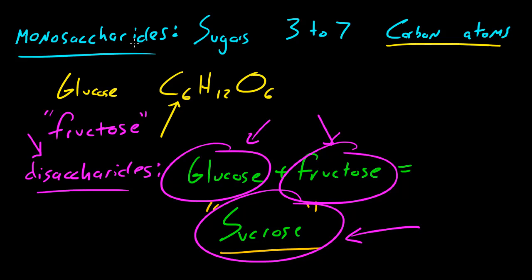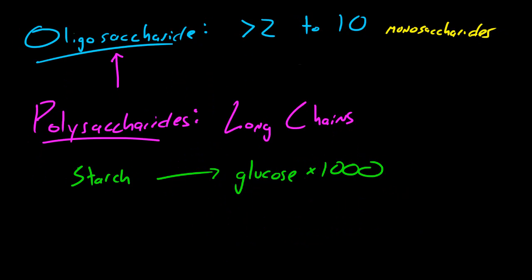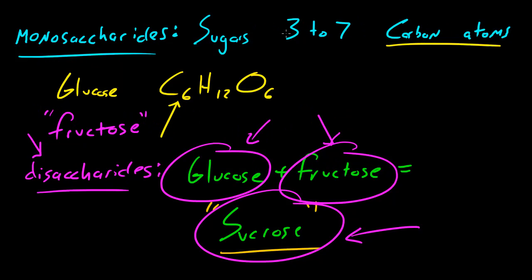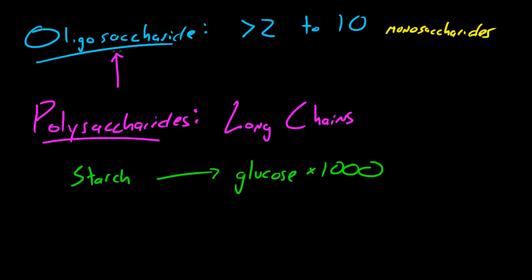So carbohydrates come in one of four forms. Monosaccharides are basic sugars with 3 to 7 carbon atoms. Disaccharides are two monosaccharides joined together. Oligosaccharides — however you say it — are more than two but usually no more than ten monosaccharides. And polysaccharides are chains of usually hundreds or thousands of monosaccharides. So: mono, di (two), oligo (two to ten), and poly (usually hundreds or thousands).